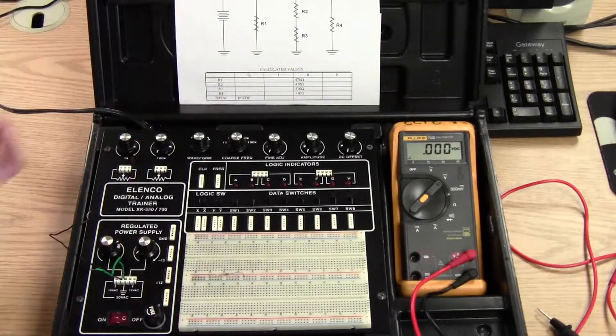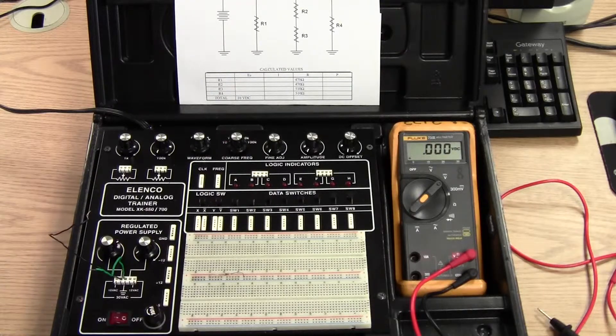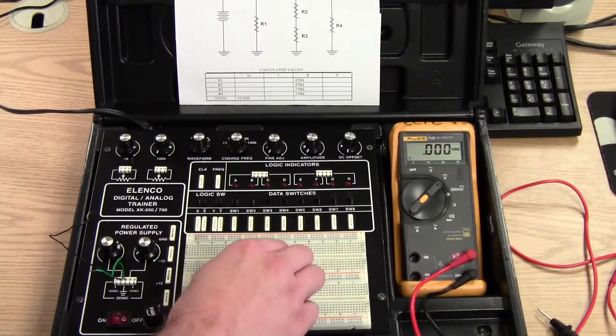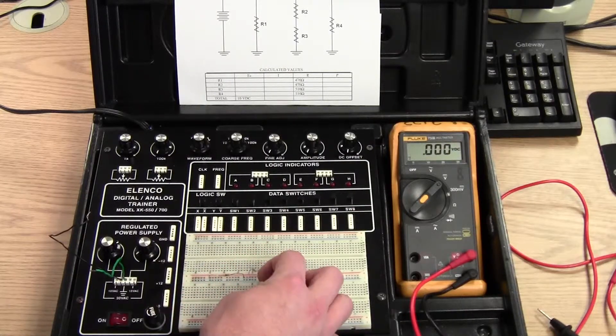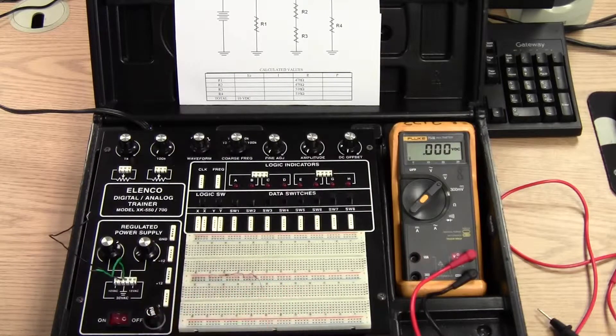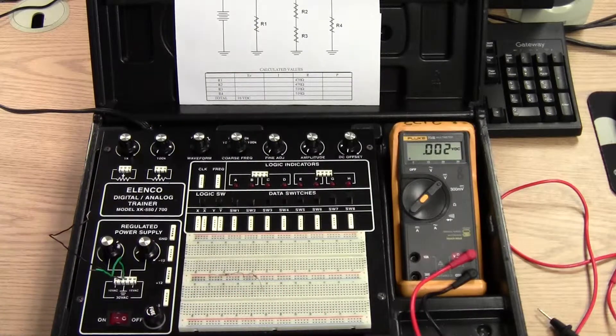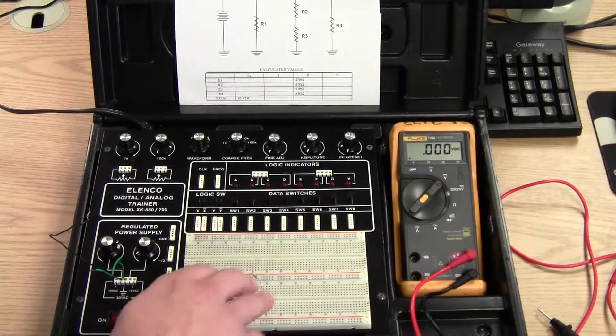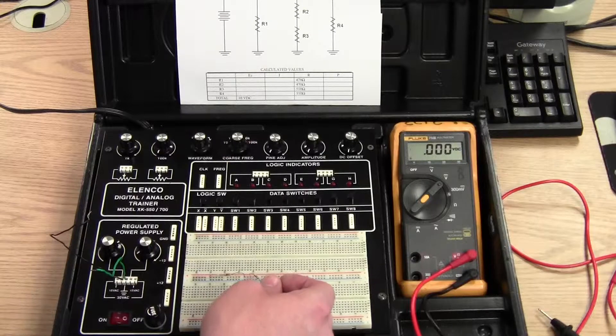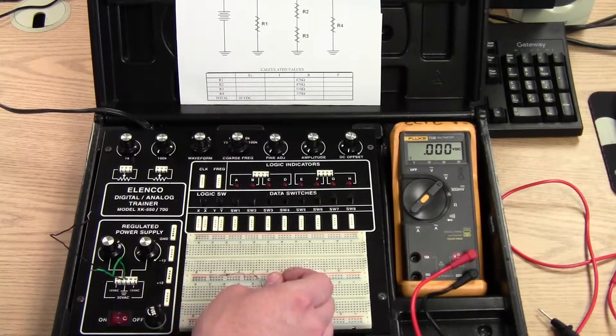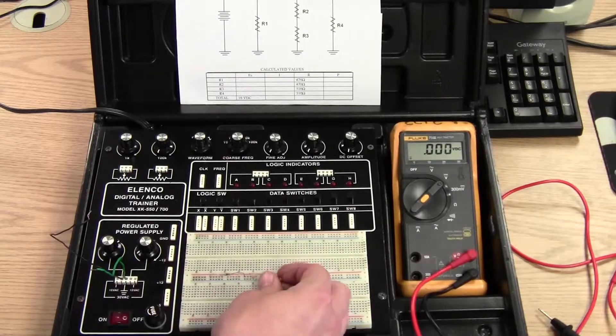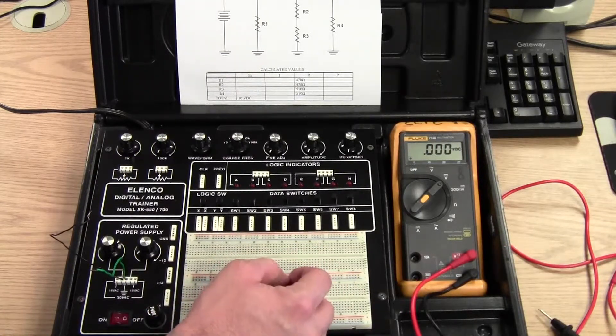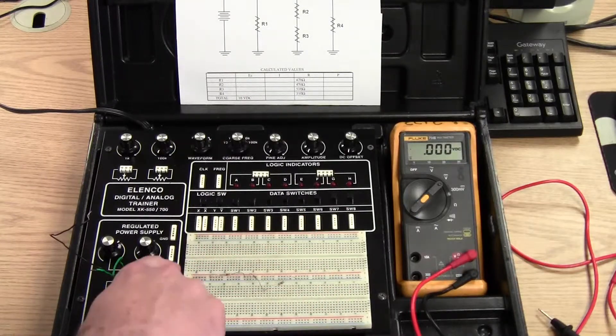R2 is a 470 and I'm going to connect it one end into the positive strip and then the other end I'm going to run out to the breadboard here. Row 14. The next resistor is a 510. It's in series with R2 here so I'm going to put one end of this 510 in the same row as the 470. Row 14 and then I'm going to run it to the negative strip of the circuit.